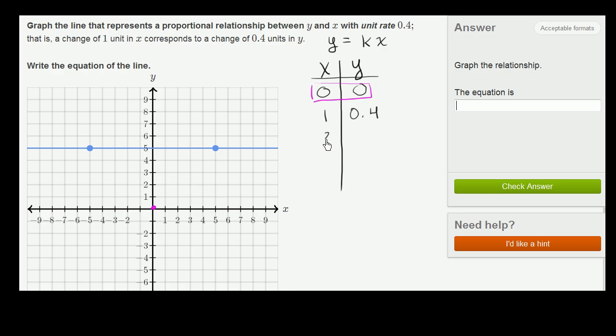So when x increases another one, y is going to increase by 0.4 again to 0.8. When x increases again by 1, then y is going to increase by 0.4 again to 1.2. If x increases again, y is going to increase by 0.4 again to 1.6.